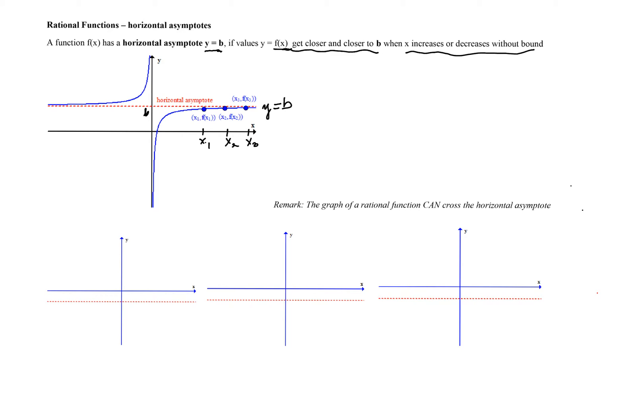For a rational function, there can be only one horizontal asymptote. There might be none, but if there is a horizontal asymptote, it is exactly one. If there is a horizontal asymptote, the graph of the function will approach this line on both the left and the right. It is also worth mentioning that a graph of a rational function can cross a horizontal asymptote, so there might be some point where the graph crosses it.